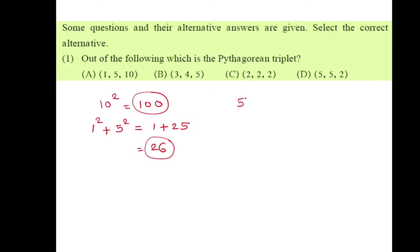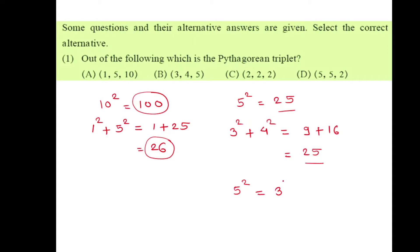Let's check the second group: 3, 4 and 5, of which the largest number is 5. So 5 squared is 25. The remaining two numbers are 3 and 4, so 3 squared plus 4 squared is 9 plus 16, that's 25. In both cases we get 25, meaning 5 squared equals 3 squared plus 4 squared. The largest number squared equals the sum of squares of the remaining two, so the second alternative — option B, 3, 4 and 5 — is a Pythagorean triplet. We need not check C and D.